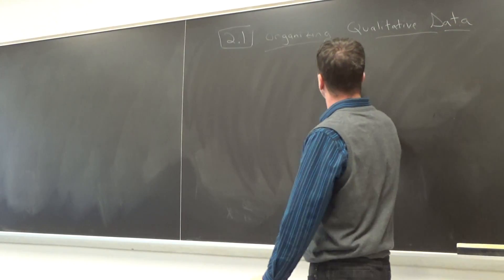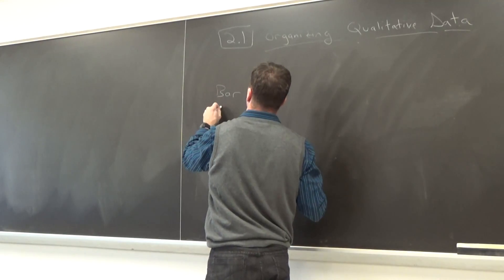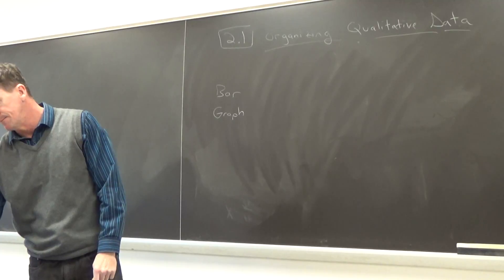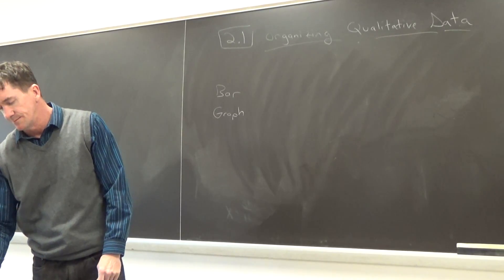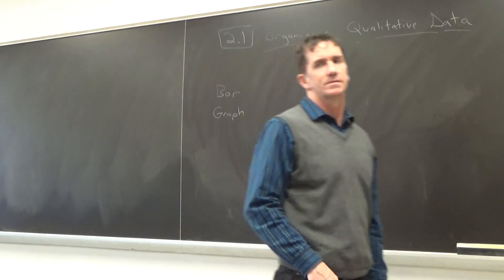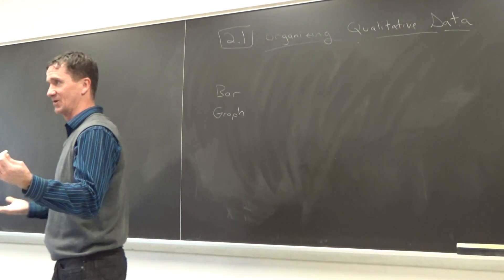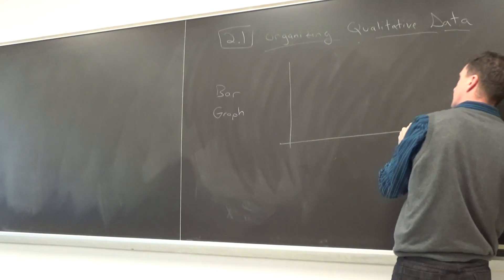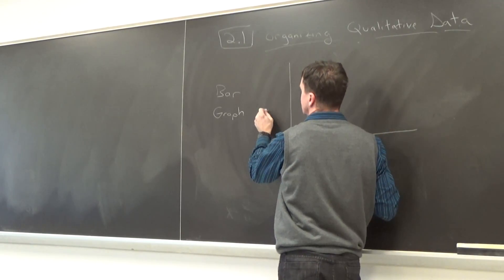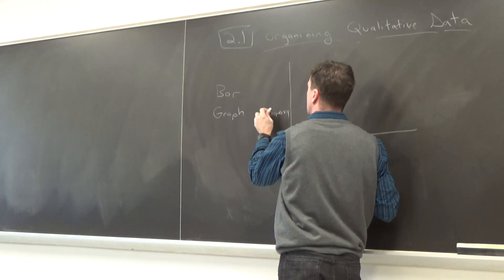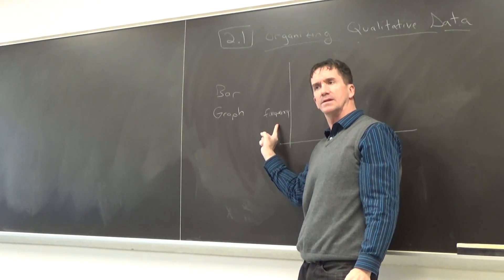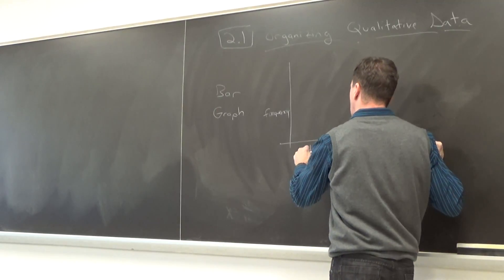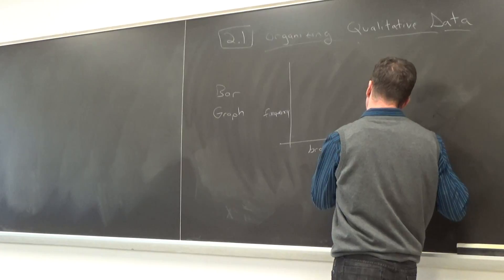I'm going to start with making something called a bar graph, and this is in Section 2.1. You've seen bar graphs for years — you've got these rectangular bars. Bar graphs are used to describe qualitative data. So if I need colors of shoes, over here we can list the frequency — that's a count — and then here I can label this as color of shoes.